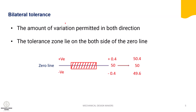Bilateral tolerance means variation is permitted in both directions. Look at the drawing — tolerance is permitted on both sides, that is the positive side and negative side, which means 50 plus 0.4 and minus 0.4. So the actual dimension can vary from 49.6 to 50.4. If the part is produced beyond or below these dimensions, it will be rejected in quality control.